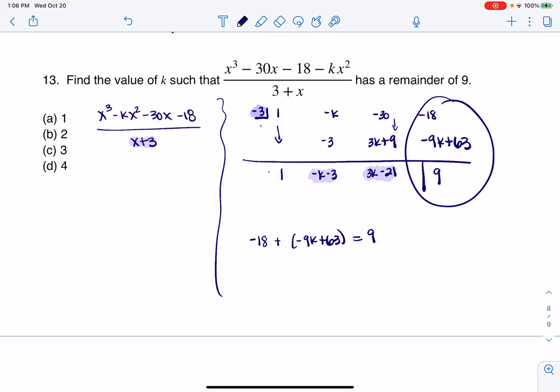And so let's play this out. This is negative 18 minus 9k plus 63. That should equal 9. So I'm looking at negative 9k plus 45 equaling 9. I'm just combining like terms.